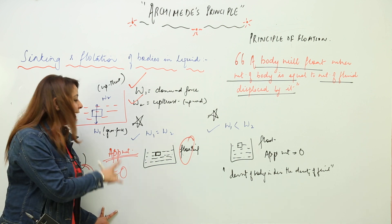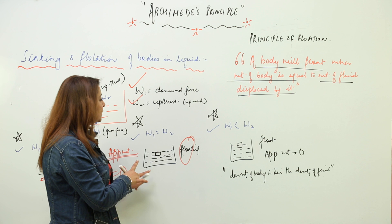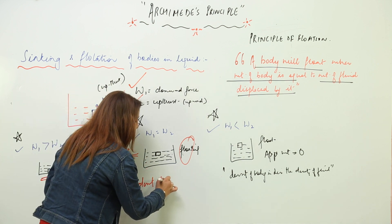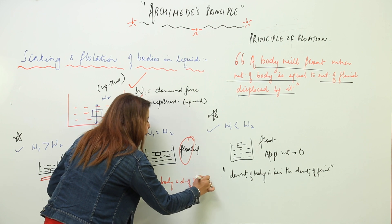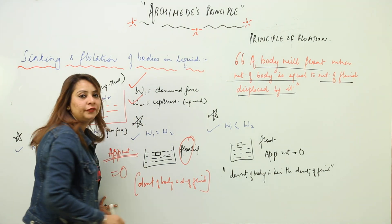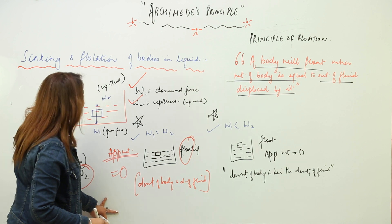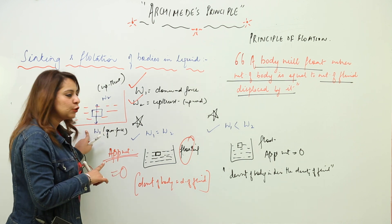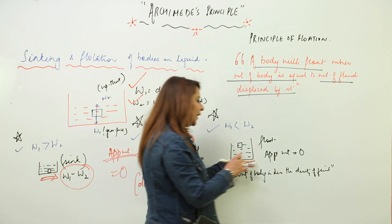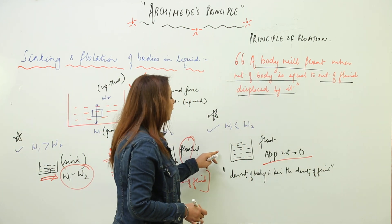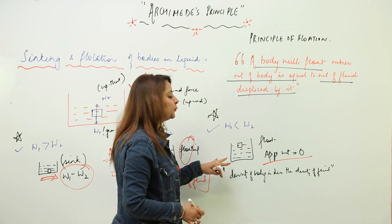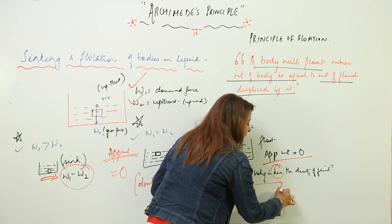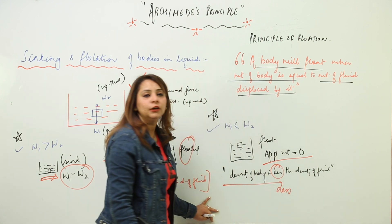This condition — where apparent weight is zero and the body floats just below the surface — is seen when the density of the body is equal to the density of the fluid. The third condition is when W2 is more than W1; the body is going to float and the apparent weight is again zero. This is seen when the density of the body is less than the density of the fluid.